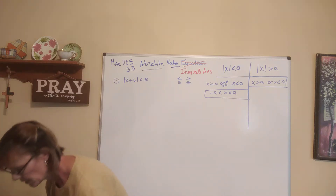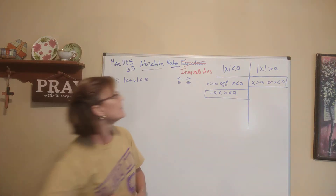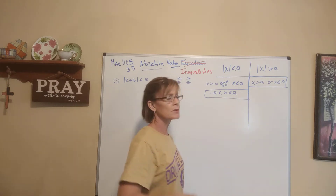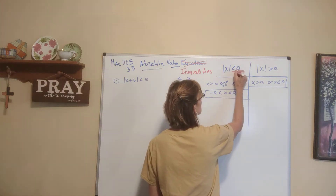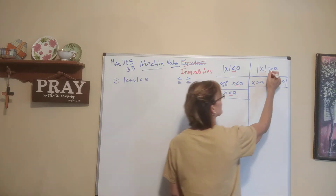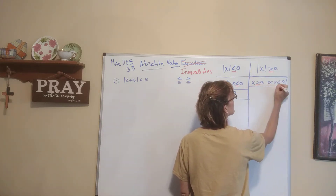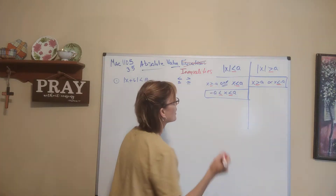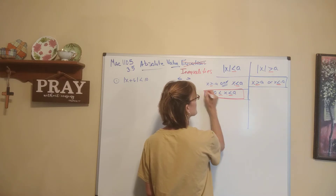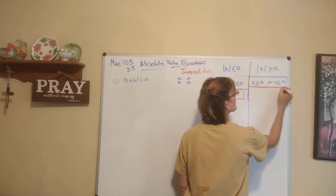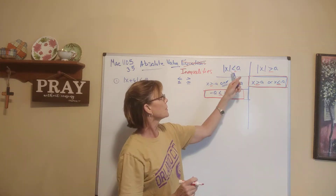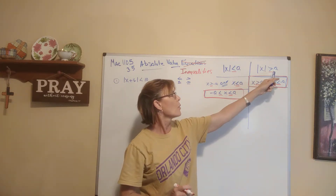Also, let me just make sure I say this. These same statements are true if there was an 'or equal to' underneath it. So if this was less than or equal to, then this is what we'd say. If this is greater than or equal to, then this is what we'd say. There are two different versions. I'm going to be using the simpler one for less than, and the standard version for greater than.